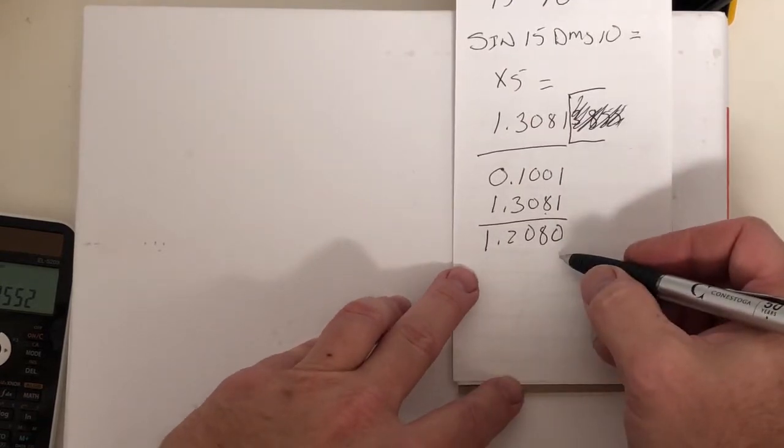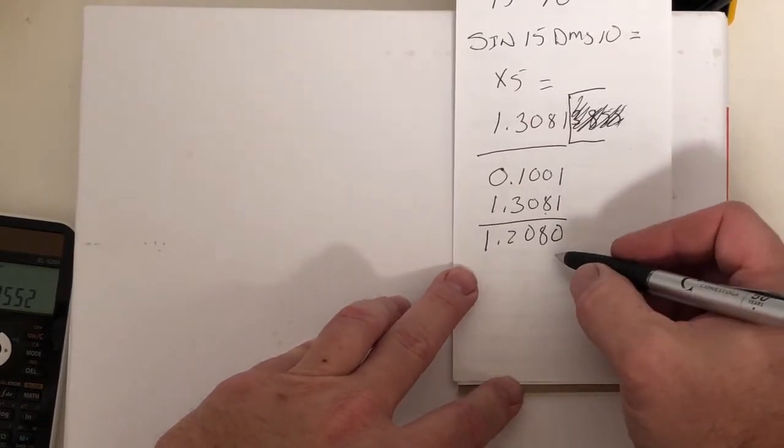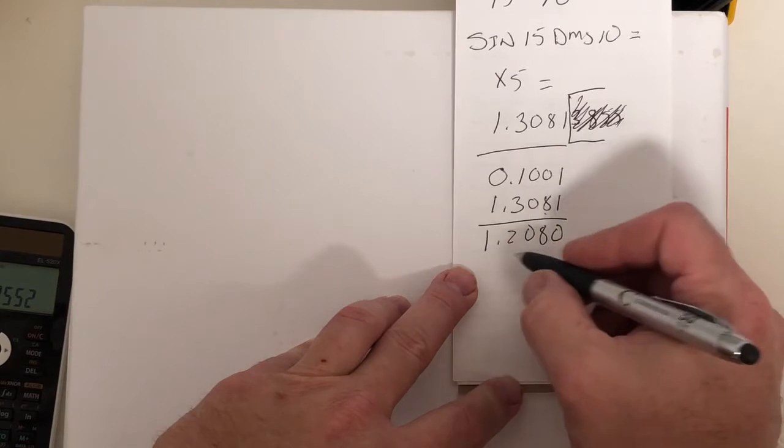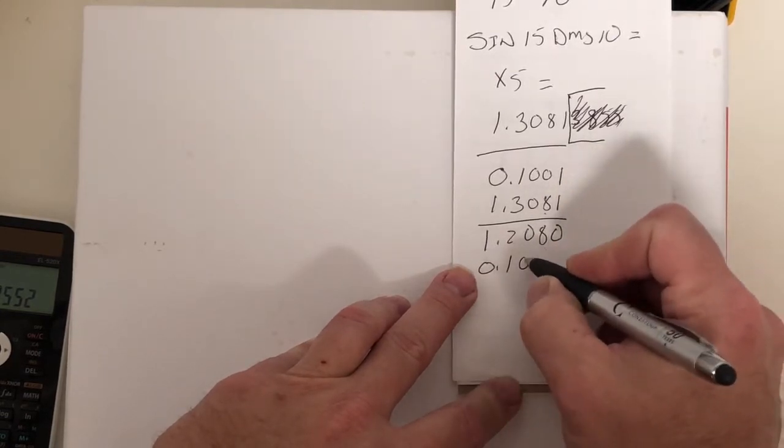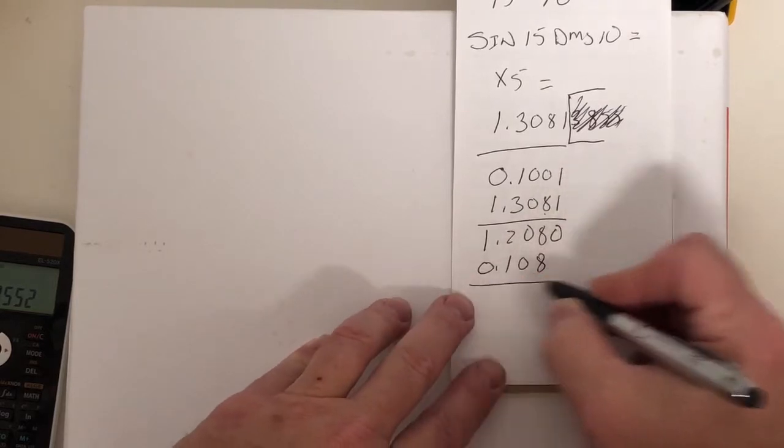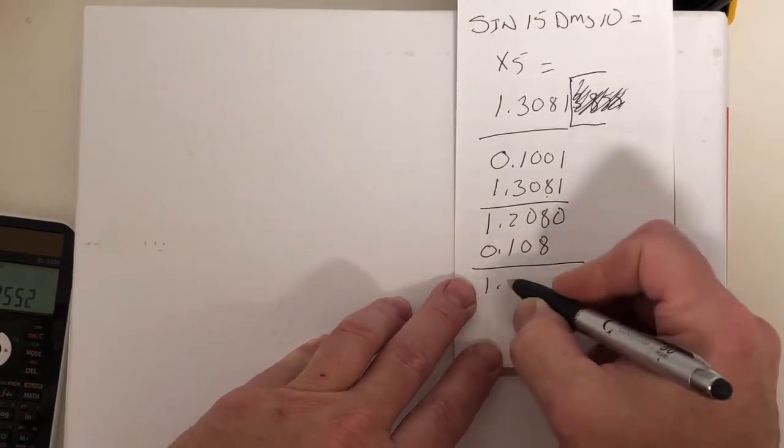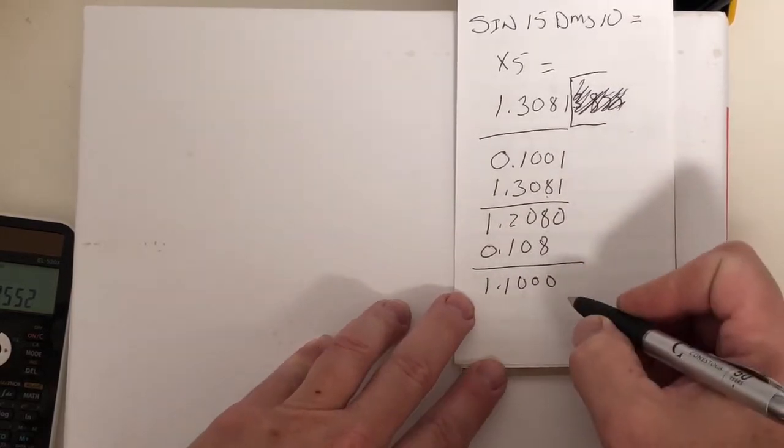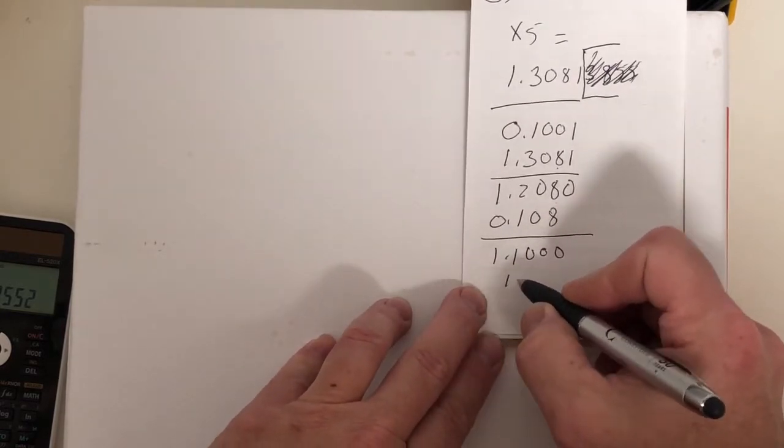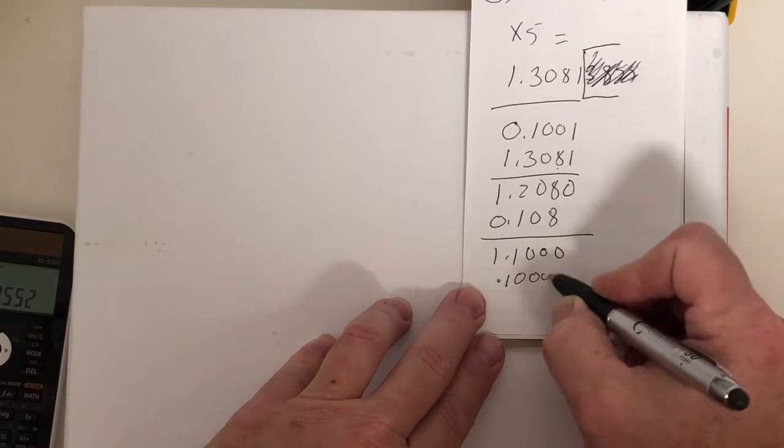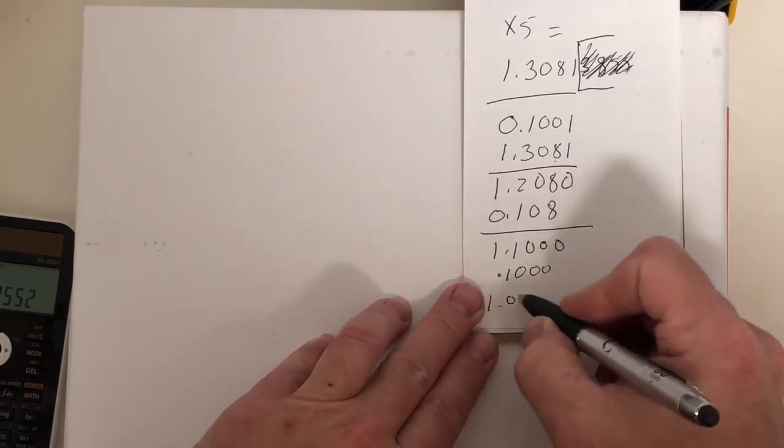So then we would turn around and say, let's subtract that number. What we're going to do next is we're going to add 8 thou. So 0.108, which is going to be 1.1000. Then it would be 100 thou. It should be 1.000. Then it would be a one inch block.